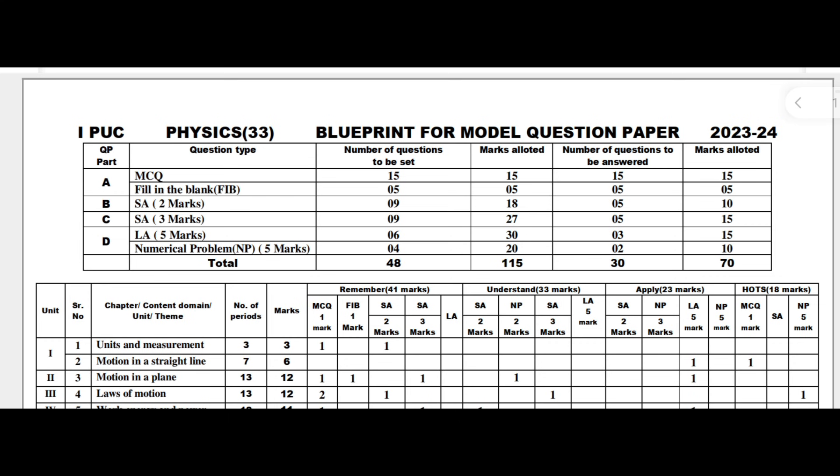Dear students, as you all know, the theory exam is going to be conducted for 70 marks and practical is for 30 marks. This blueprint explains how the 70 marks are distributed across several sections and chapters. There are four sections: Part A, Part B, Part C, and Part D. Part A includes MCQ as well as fill-in-the-blank type questions, and Part B includes two-mark type questions.